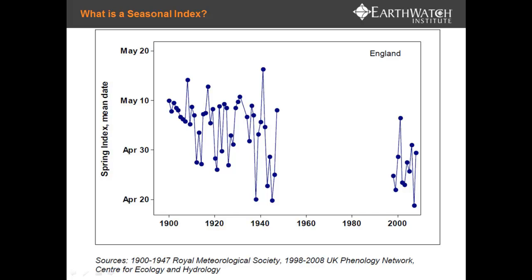Data from a range of species can be combined to create something called a spring index or seasonal index. This is from the UK Phenology Network, where they have combined data from two birds, a butterfly, and a plant to essentially calculate the start of spring. The original part of the dataset, up until the 1940s, was collected by the Royal Meteorological Society. There was then a break, and more recently with Nature's Calendar in the United Kingdom, volunteers have been collecting data on the same species. You can see there is a step change — spring is starting earlier than it has in the past. This is the direction we would like to take with Climate Watch: as we build up more data, we can combine the most recorded species to produce a spring index and report on the timing of the seasons in Australia.